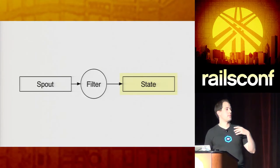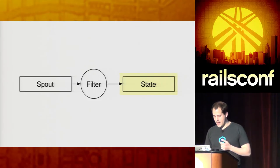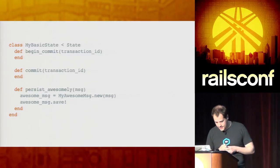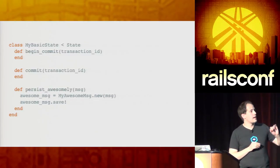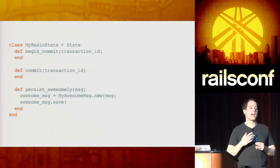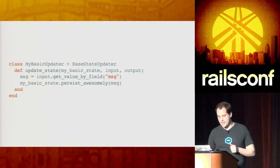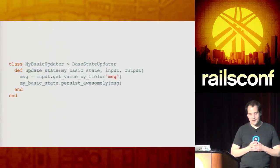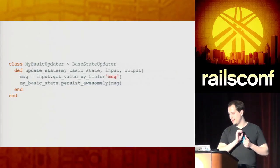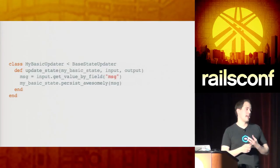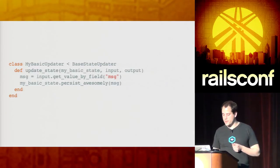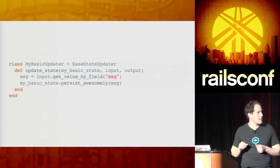I'm going to jump directly into how you would implement a state from scratch. You make a class and inherit from State, provided as part of the Storm API. The only methods you have to define are begin_commit and commit — I'll cover those later. You provide whatever API you want to interact with a state. The state updater requires you to define the method update_state, which passes in the instance of your state and the input tuple, and an optional output stream in case you want your state to emit more tuples.